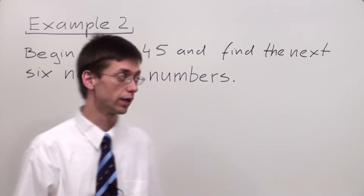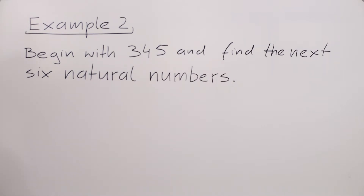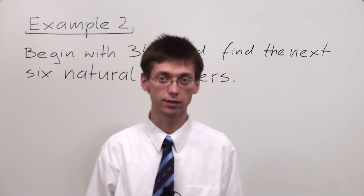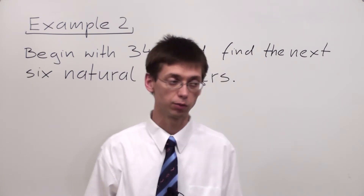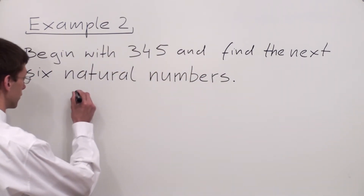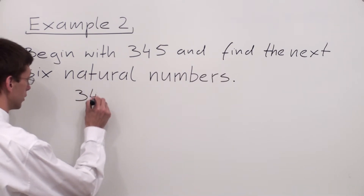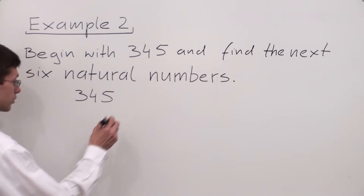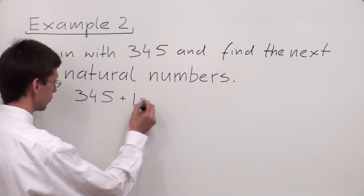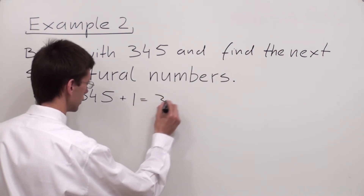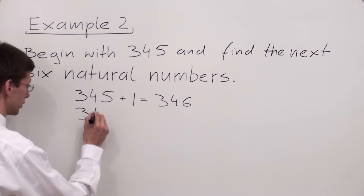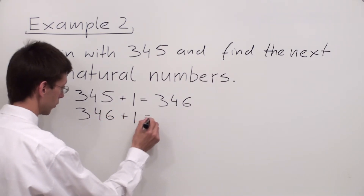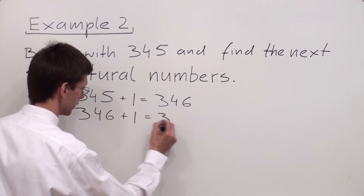Let's practice. We have example 2, which says: begin with 345 and find the next 6 natural numbers. As we said before, in order to find the next natural number, we simply add 1 to the previous natural number. So starting with 345, I add 1 to get 346. Next, I add 1 to 346 to obtain 347.